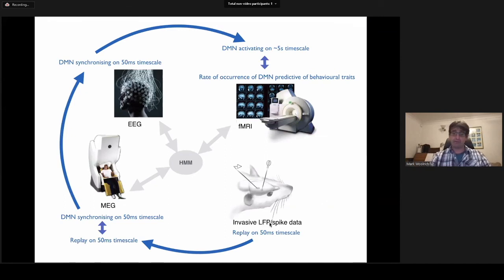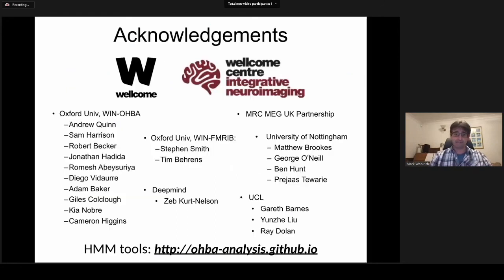So hopefully I've given you a flavor of what we can do with multimodal investigations, particularly using the HMM to link across multiple timescales and different modalities. It's a very flexible technique. With replay, we saw how we can go from 50 millisecond information about replaying animals and link that in humans to large-scale network dynamics in MEG. Then through simultaneous EEG and fMRI data, we can link that through to the slower fMRI timescales. Overall, by doing this, we can link the field of replay to the field of large-scale resting state networks in fMRI. I'll just finish by saying a big thank you to all my collaborators. Thanks for listening.